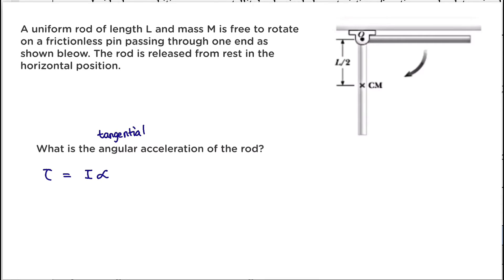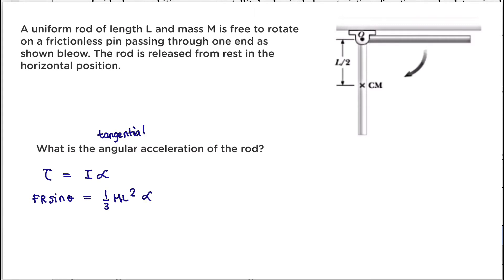You expand the equation where you have F·R·sinθ which is the torque. The moment of inertia in this case is the moment of inertia of the rod where the axis of rotation is on one of its ends. Referring to the moment of inertia table, that gives us (1/3)ML². Since the question is asking for angular acceleration, that is our alpha.